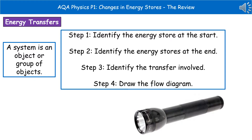One of the things you could be asked to do on your exam is to consider what's happening in terms of energy in a given system. Whenever we talk about a system, we're referring to either an individual object or a group of objects. The way we generally do this is through the use of a flow diagram.